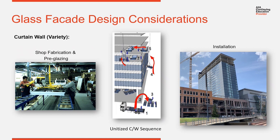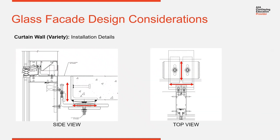Unitized curtain wall systems are great because of the interior trades. This floor is still open up top, but down below all the interior trades are already working on the interior. Contractors love this because they can get their interior trades going very quickly behind the glazers. The unitized curtain wall sits on an anchor designed to be adjustable — modules can move in and out, be raised up or down, and go side to side and front to back. This ensures the modules run in a straight line all the way down the elevation, consistently flat, keeping reference points and elevations consistent all the way around the building.